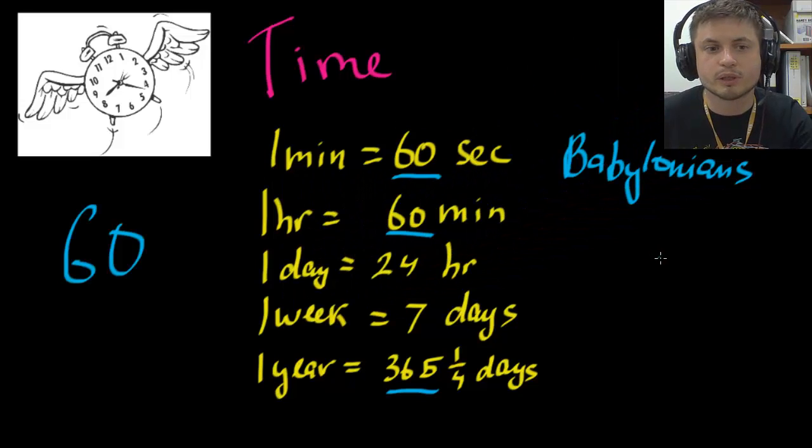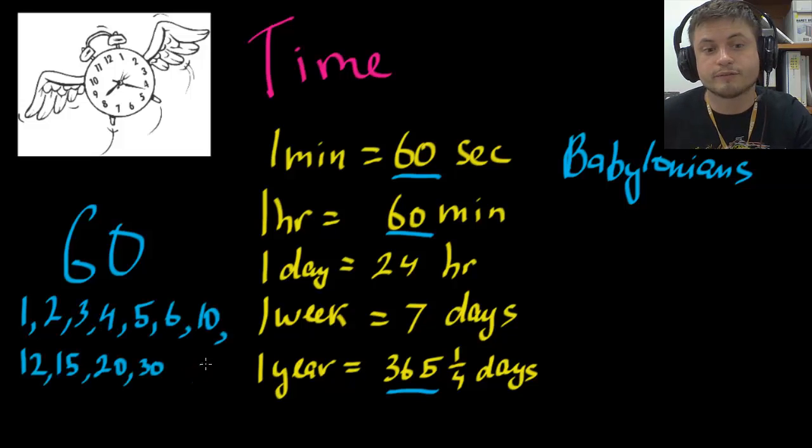So why was 60 so important to them? Well one of the reasons is because it's actually a pretty cool number that has a lot of factors in it. If you look at the factors of 60, it has 1, 2, 3, 4, 5, 6, 10, 12, 15, 20, 30. So essentially it's a number that has lots of factors which makes doing fractions and math a lot easier.